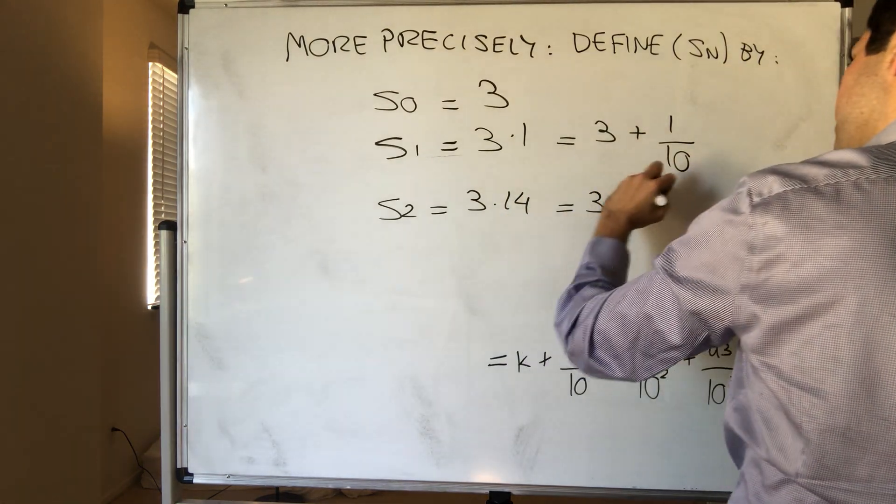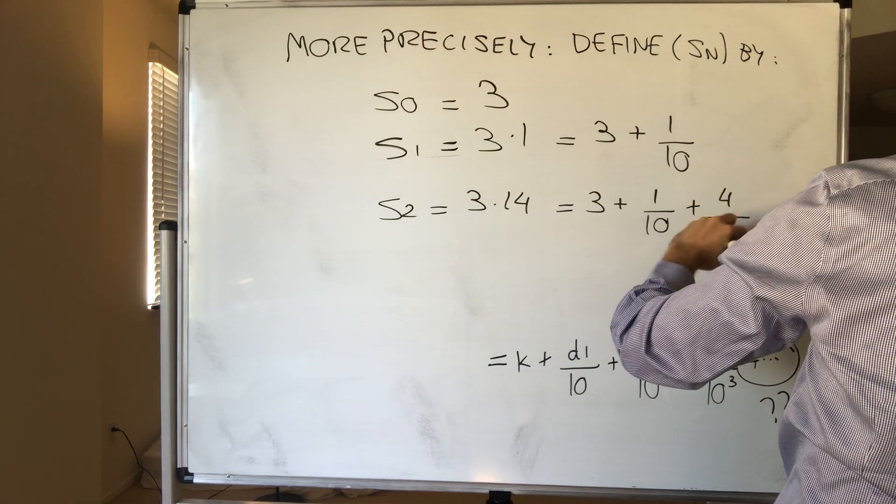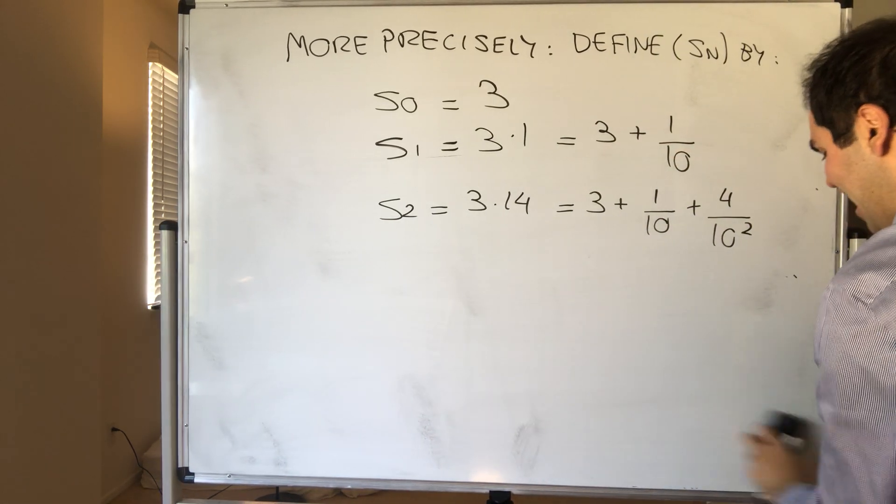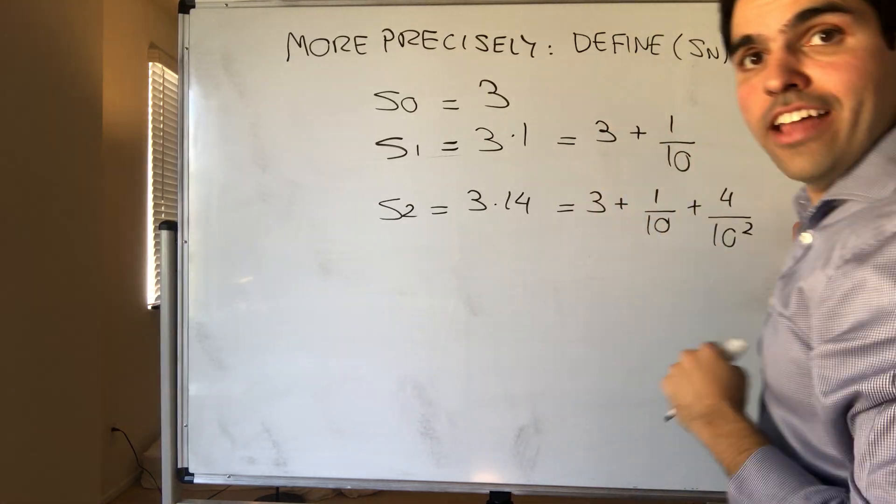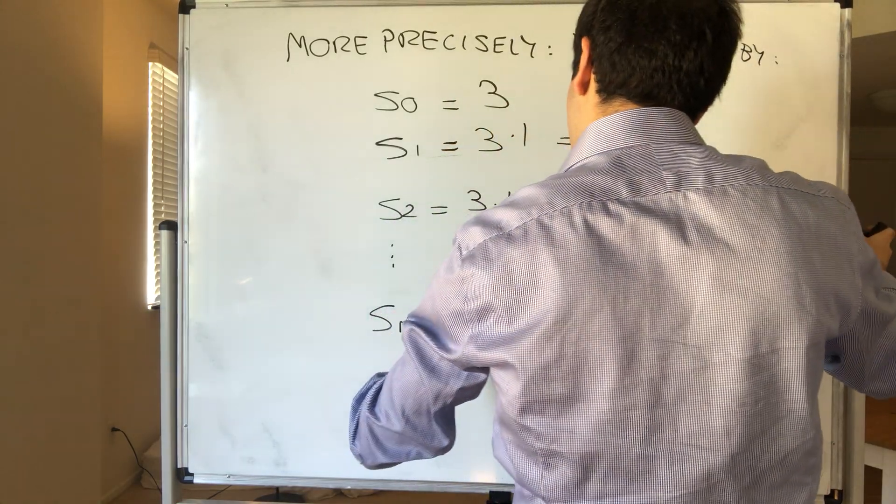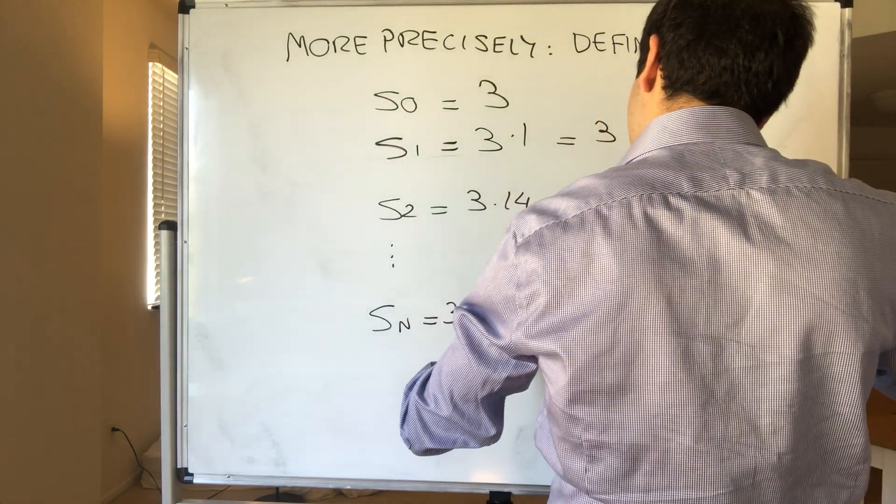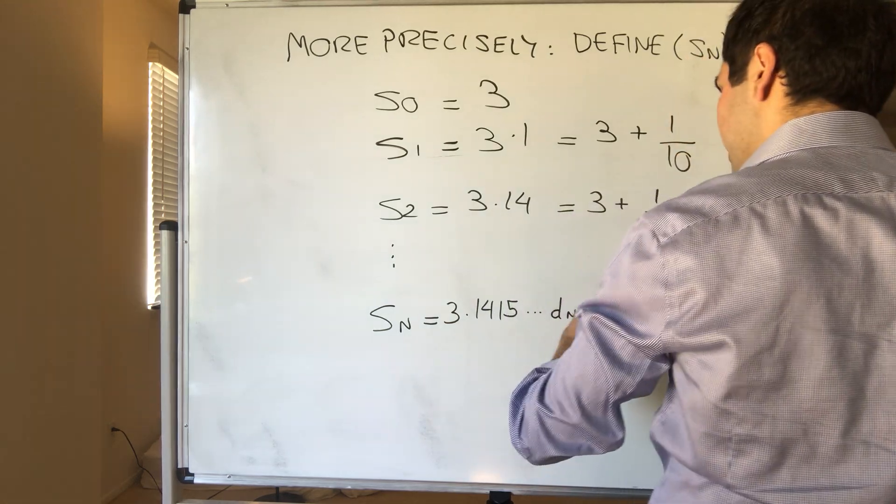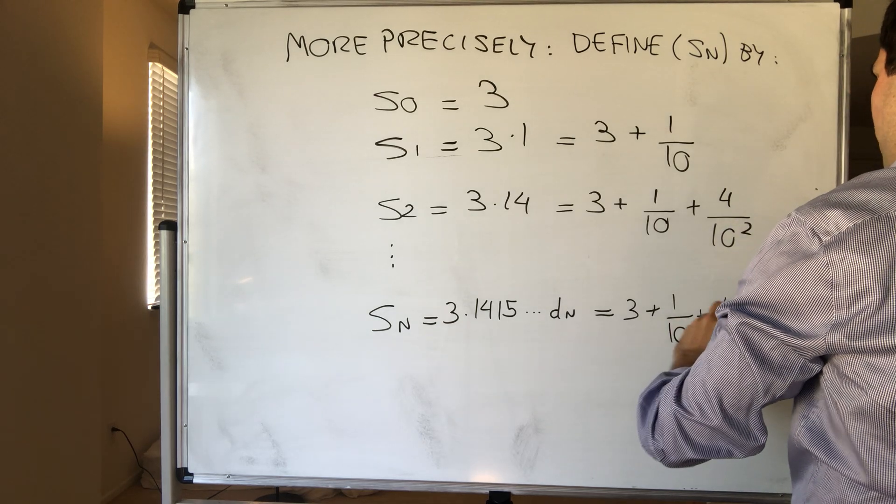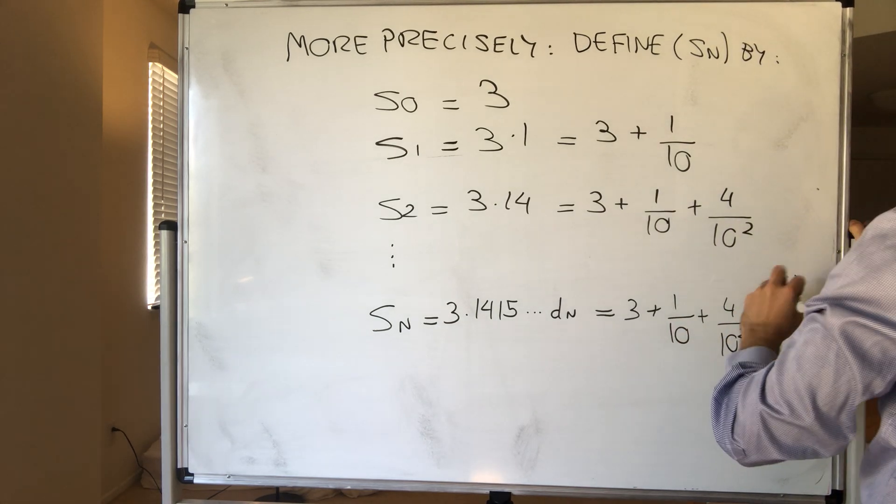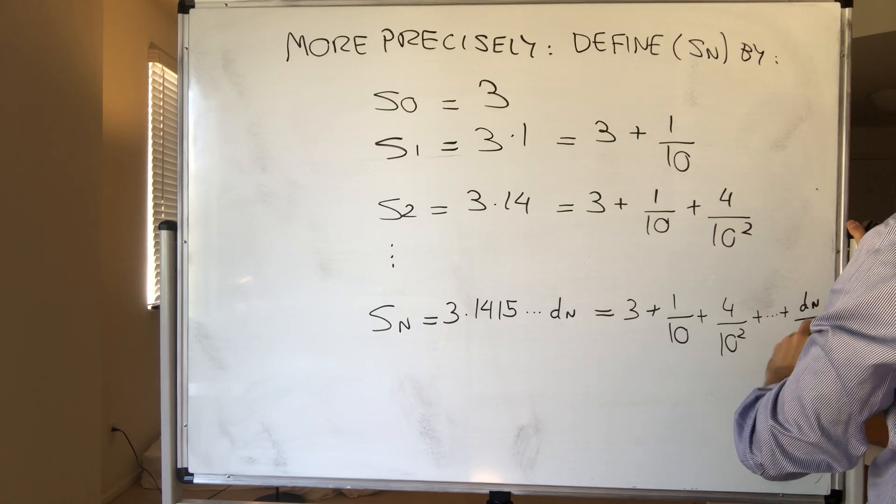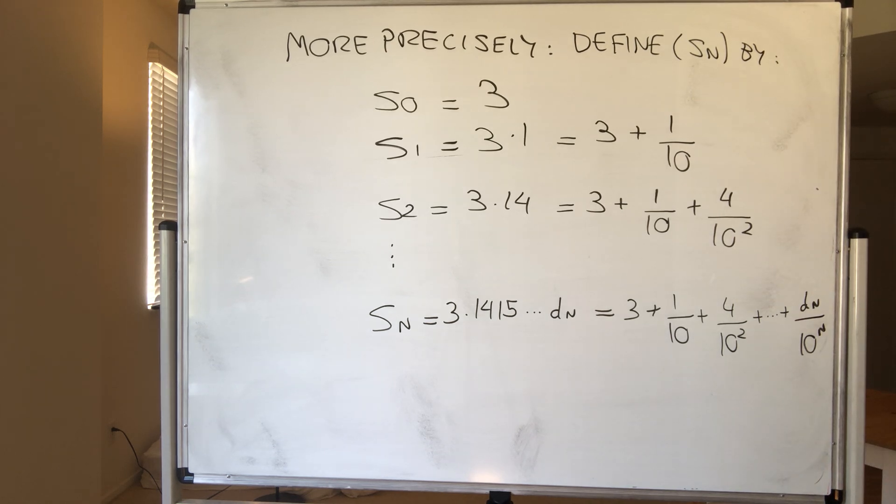And more precisely, Sn is up to the nth decimal place. So Sn is just 3.1415 dot dot dot up to dn. So that's 3 plus 1 tenth plus 4 over 10 squared, plus a finite sum, so well defined, dn over 10 to the n. Now, here's the thing.